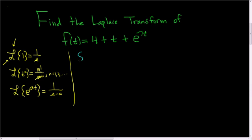Solution. We'll start by just taking the Laplace of the whole thing. So the Laplace of 4 plus t plus e to the negative 7t.